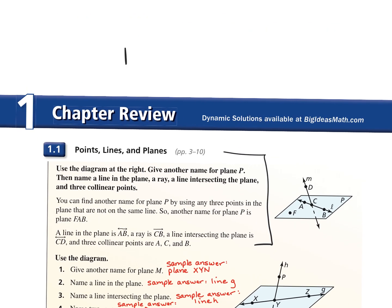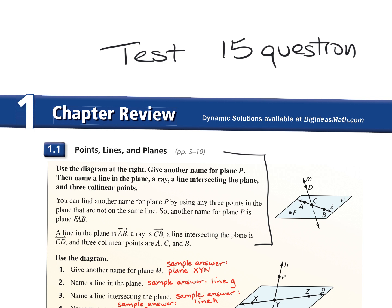On the test tomorrow, there are going to be 15 questions. Of those 15 questions, only two are multiple choice. The rest are all free response. Those two multiple choice questions are going to be 'sometimes,' 'always,' or 'never' — so those are your multiple choice answers.